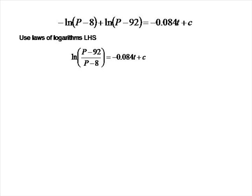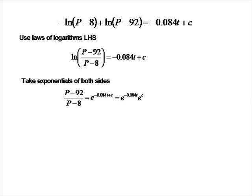Now let's take exponentials of both sides, giving us (p minus 92) divided by (p minus 8) equals the exponential of (minus 0.084t plus c). By the laws of indices, the right-hand side equals e to the minus 0.084t times e to the c. Since c is a constant, e to the c is also a constant — let's call it A.